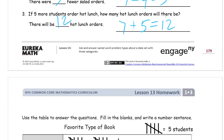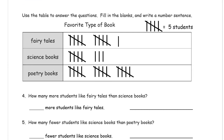Use the table to answer the questions, fill in the blanks, and write a number sentence. Favorite type of book — each group of five tally marks is five students, and each single tally mark is one student. Fairy tales: we have five, ten, and one more is eleven. Science books: five, six, seven, eight — eight students' favorite type of book is science.